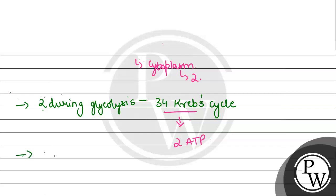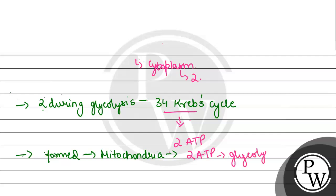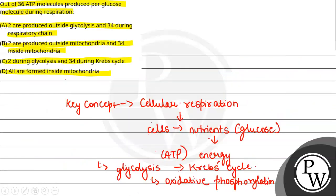Option D says all ATP molecules are formed inside the mitochondria. This is also incorrect because the 2 ATP molecules formed during glycolysis are produced in the cytoplasm, not in the mitochondria. The rest of the process occurs inside the mitochondria. Therefore, the correct answer for this question is option B: 2 are produced outside mitochondria and 34 inside mitochondria.